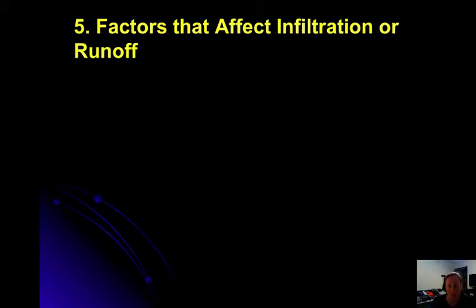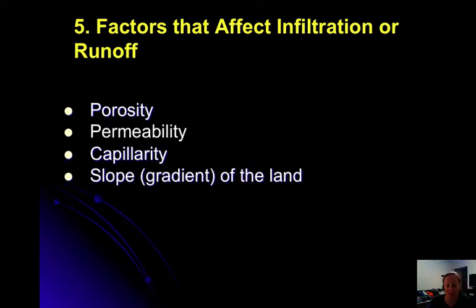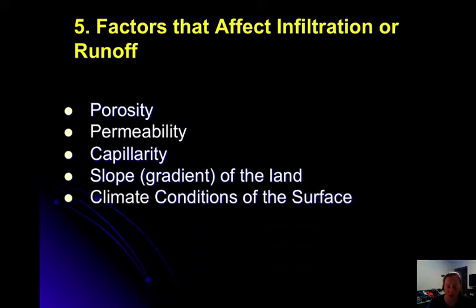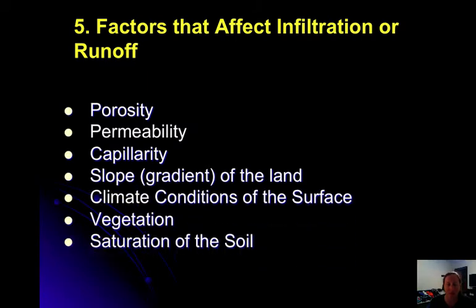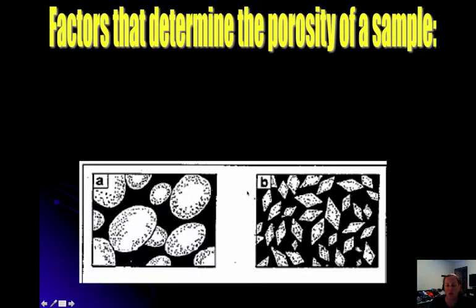The factors that affect infiltration or runoff are: porosity, permeability, capillarity, slope or gradient of the land, climate conditions of the surface, vegetation, saturation of the soil, and land use. Porosity is the amount of openings or pore spaces between sediment for water to pass through. We talk about porosity based on the percentage of space available for water to seep into.